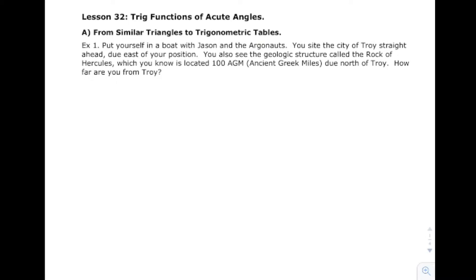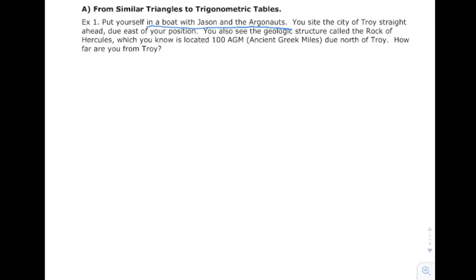Where does trig come from? It might come from Greece, Egypt, or Sumer, but let's assume Greece — because then we can put ourselves in a boat with Jason and the Argonauts. The Greeks were good at using math for navigation. They had the Mediterranean, floating all over the place, and needed to navigate. Here's the example: you're in a boat with Jason and the Argonauts, and you can see the city of Troy straight ahead, due east. You also see the Rock of Hercules, located 100 ancient Greek miles due north of Troy. How far are you from Troy?